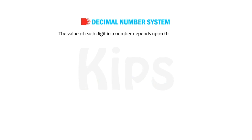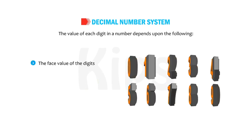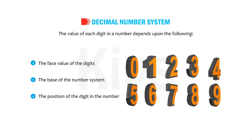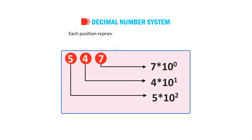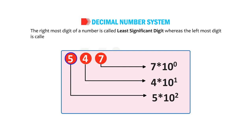The value of each digit in a number depends upon the following: the face value of the digit, the base of the number system, and the position of the digit in the number. Each position represents a specific power of base 10. The rightmost digit of a number is called the least significant digit, whereas the leftmost digit is called the most significant digit.